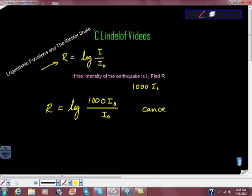We can cancel I₀, can't we? And that gives us that R scale is log of 1,000, right? Remember, you guys, if we have the common log, it's base 10, isn't it?